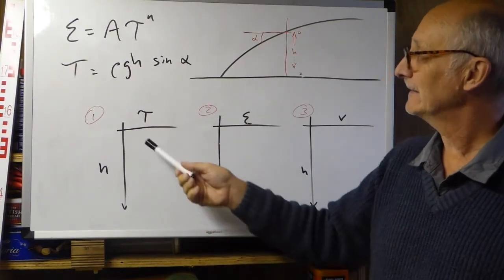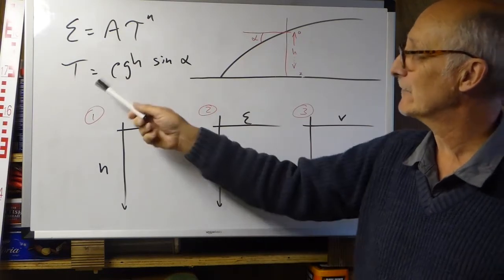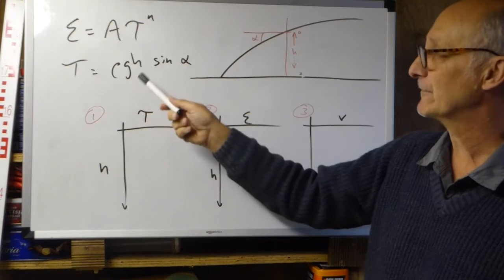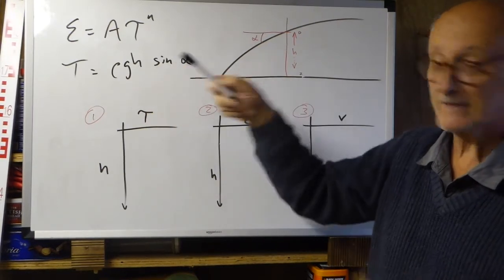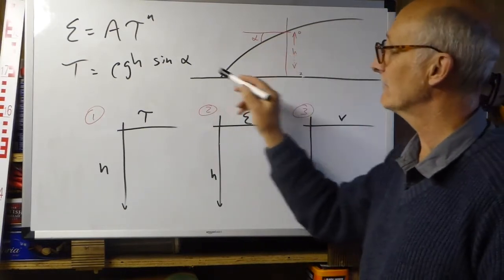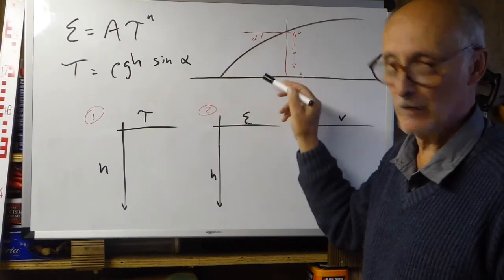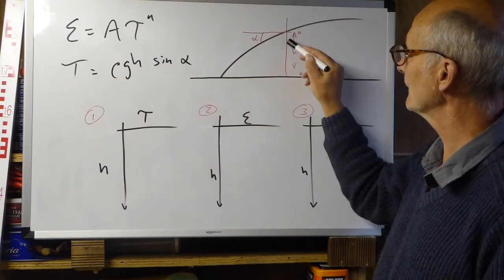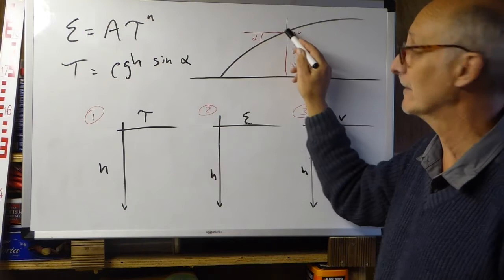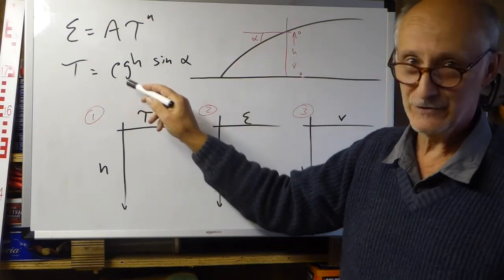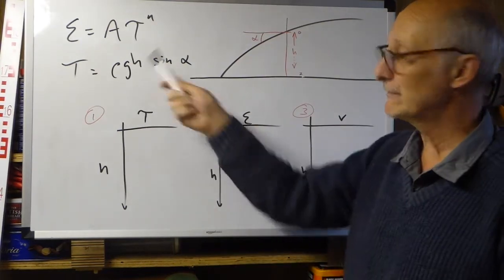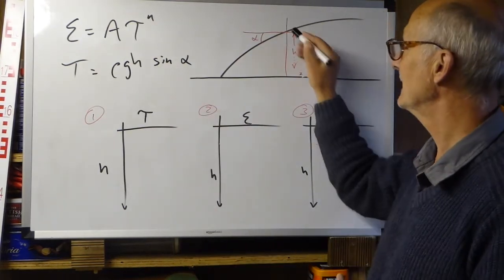So, the stress profile — that's going to be given by tau equals rho g h sin alpha: density of ice, force of gravity, the height or thickness of ice above your point, and the surface gradient. As you can see from this diagram, the surface gradient is a constant because we're always going down beneath the same point on the surface. Likewise, rho and g we can take as constants, so the only variable in that equation is h.